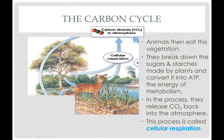Once that happens, if an animal were to come along and eat one of those photosynthesizers, they will consume the sugars and starches that were made by that plant. We know that glucose is C6H12O6 — so there's carbon in those sugars. The animals will use that C6H12O6 in cellular respiration to make ATP in the mitochondria. And remember, CO2 is a waste product of cellular respiration, so the animals will release that CO2 back into the atmosphere as a byproduct.